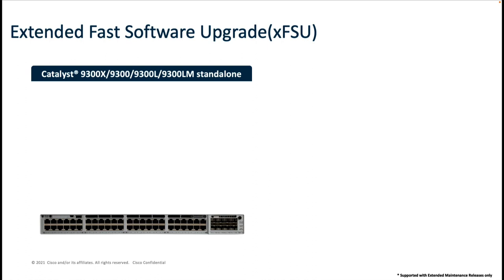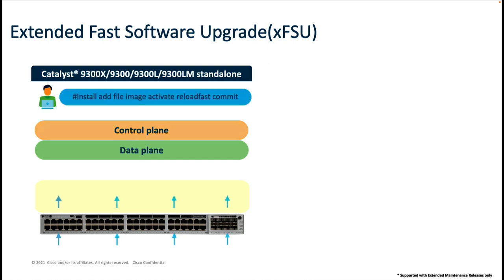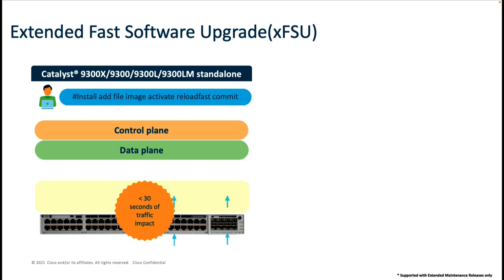Another key capability ensuring a highly resilient and available network even during upgrades is Extended Fast Software Upgrade, which limits traffic impact during an upgrade to less than 30 seconds. This is accomplished through control plane and data plane segregation. On a standalone device, it updates the control plane leveraging NSF or graceful restart architecture, allowing data packets to continue forwarding along existing routes. On the data plane, it uses a cache-and-flush architecture to cache information in memory and flush it back to the ASIC after syncing with the new software — all within 30 seconds.